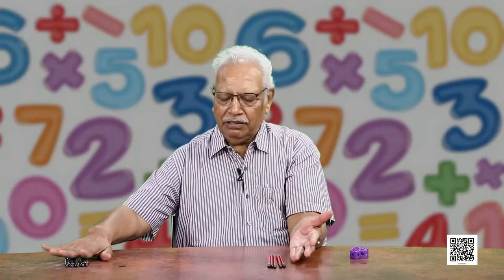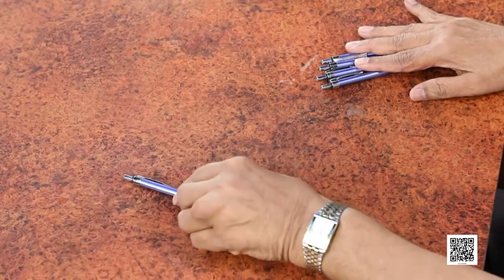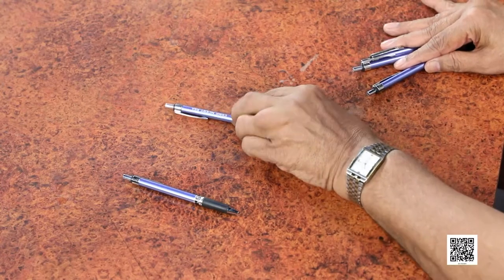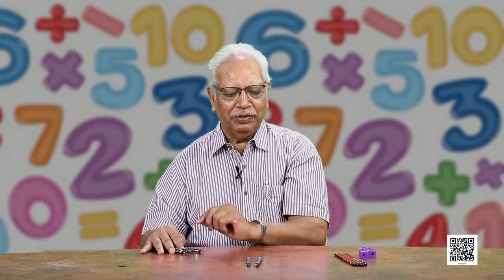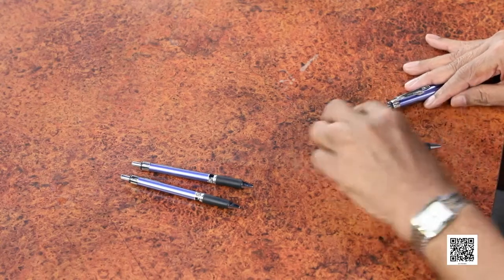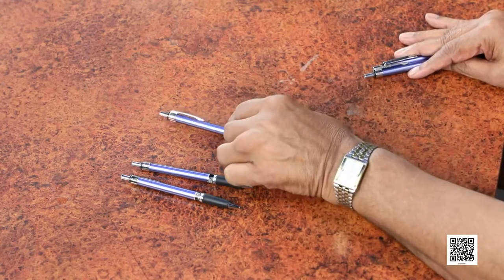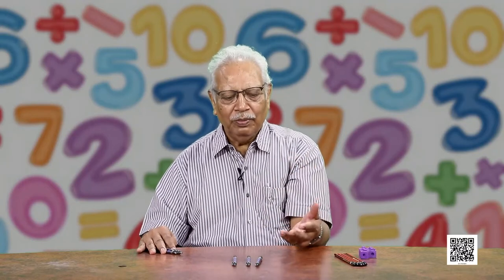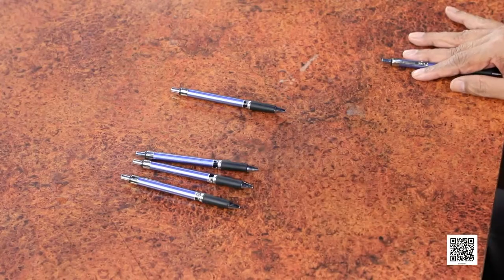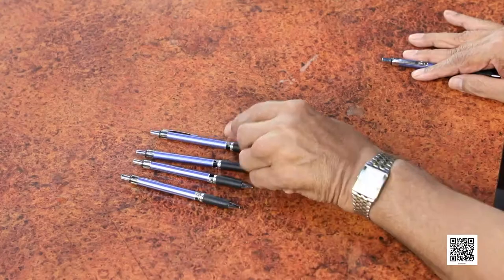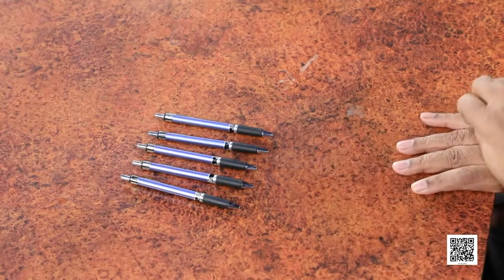We can use more daily life objects like pens. One pen and another pen — how many pens are there? Now you know 1 and 1 make 2. Similarly, 2 and 1 — how many pens? 2 and 1 make 3. You do not have to count by now; you know that 2 and 1 make 3. Similarly, 3 and 1 make 4, and 4 and 1 make 5.